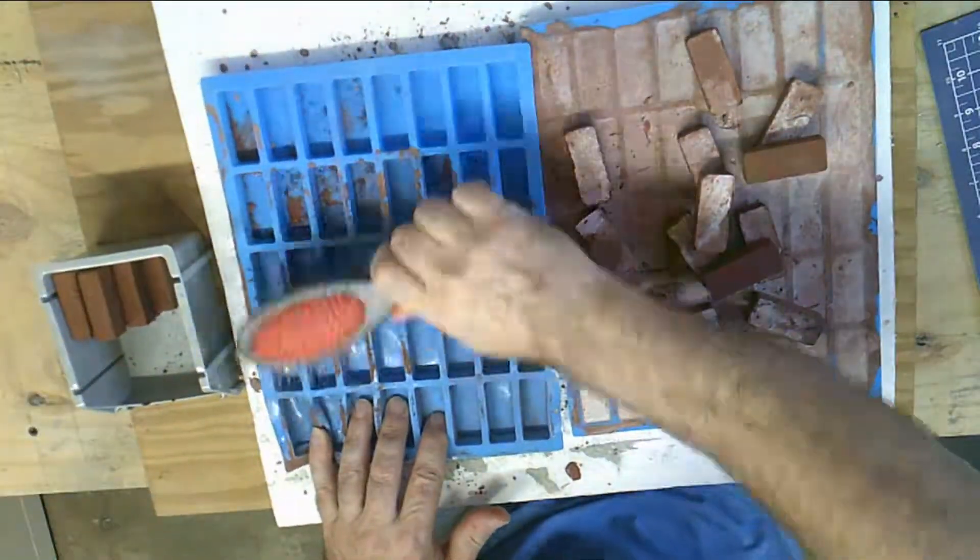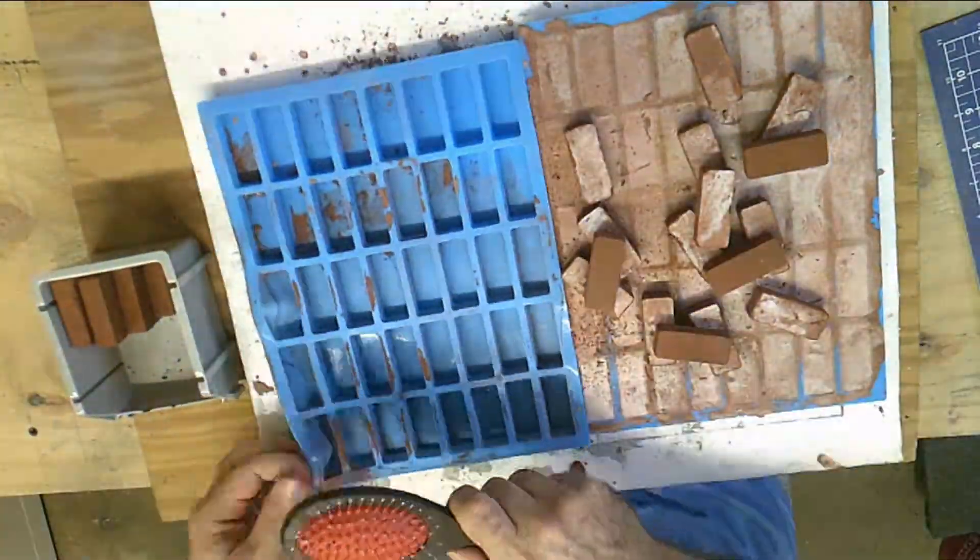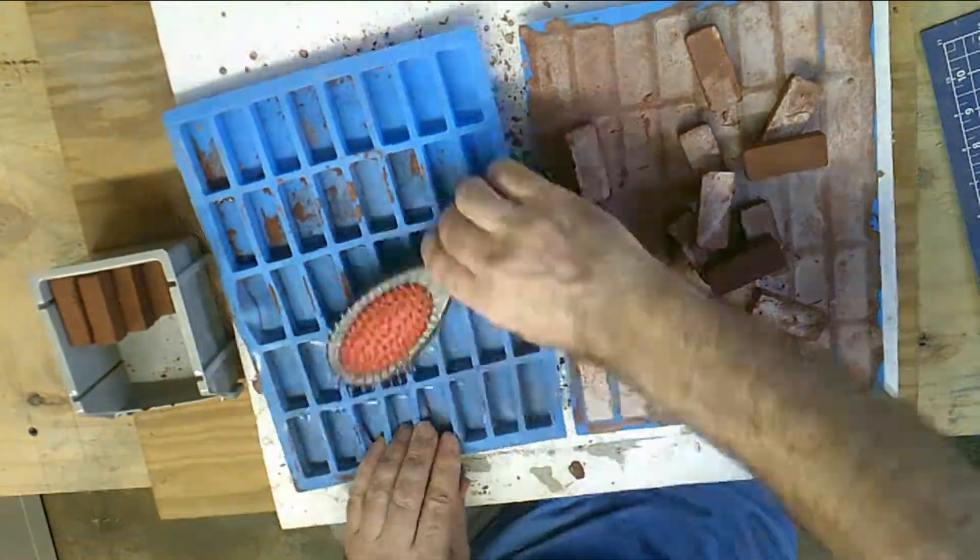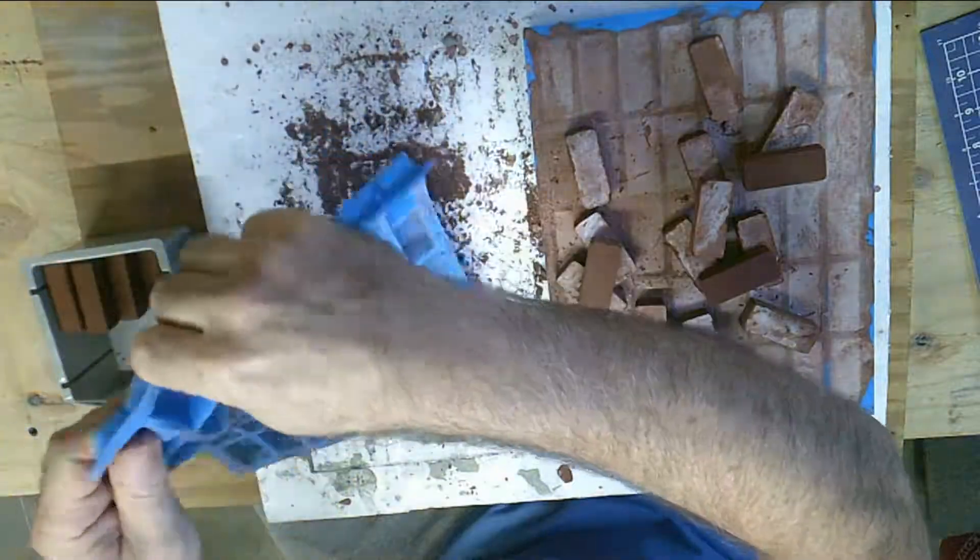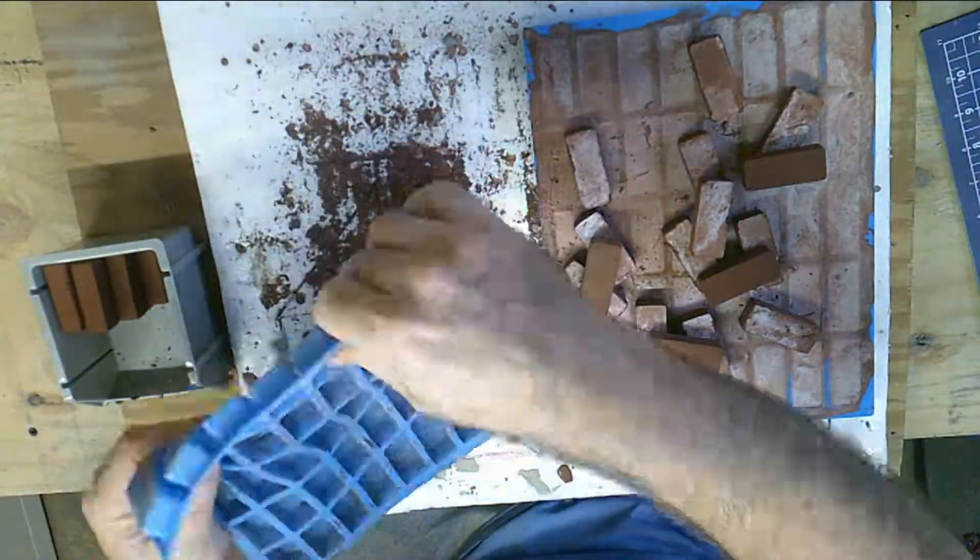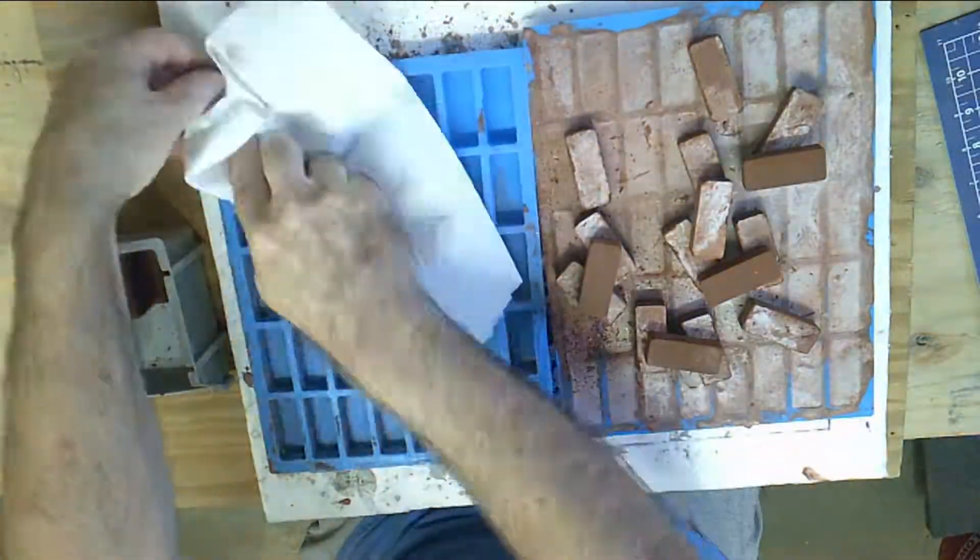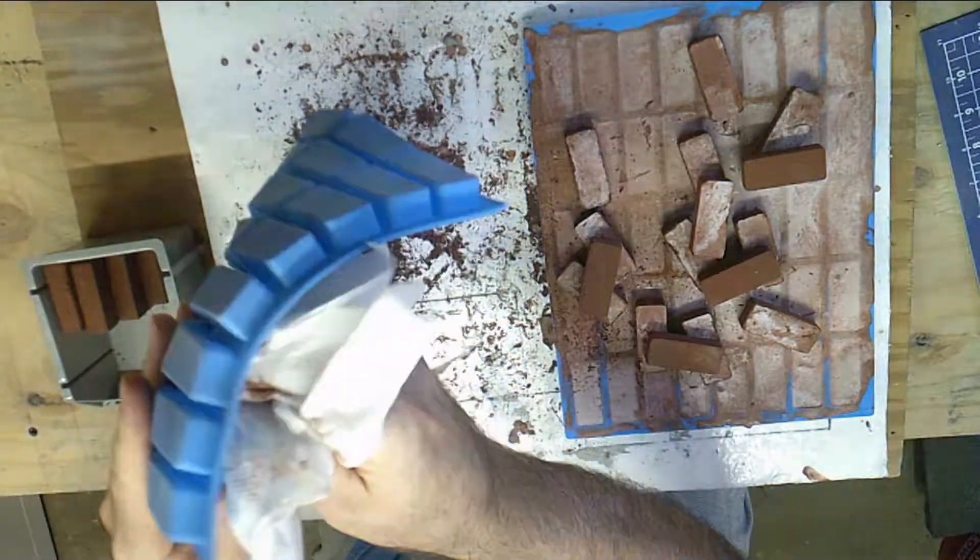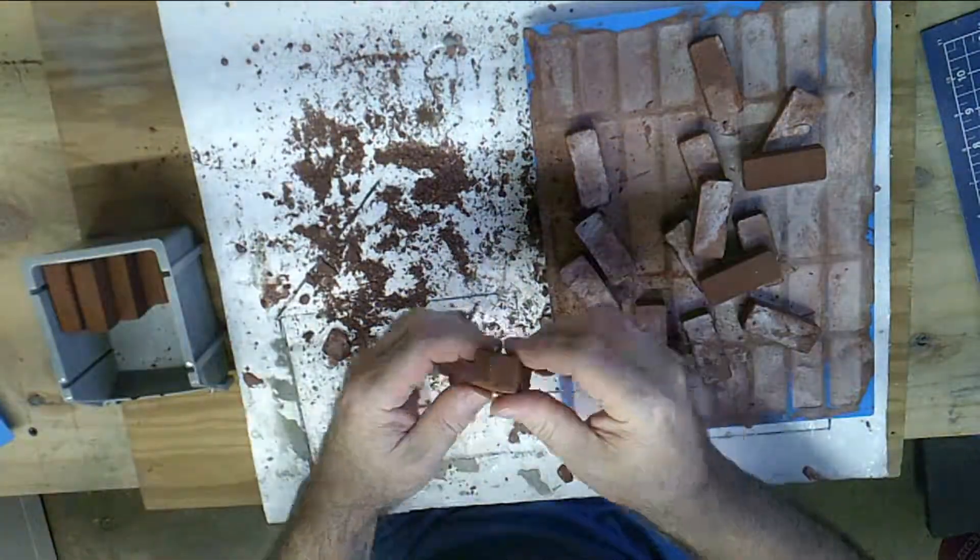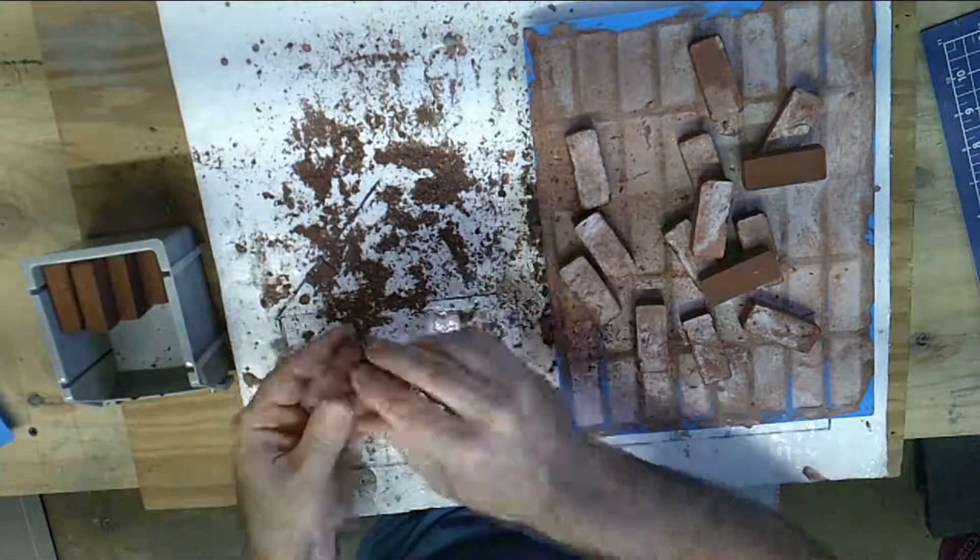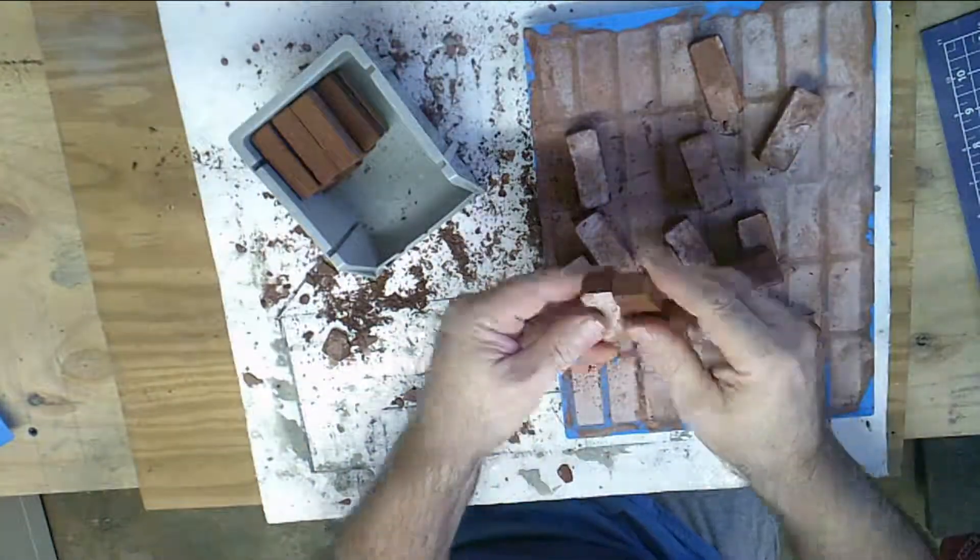Here I am using a dog brush to get the concrete off of the top of the mold and then wipe it off with a paper towel. I rub the corners of the blocks to remove the excess concrete from the edges.